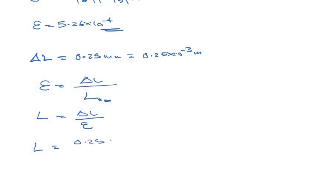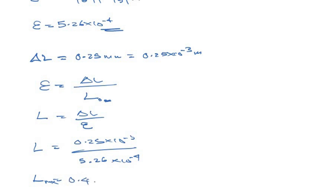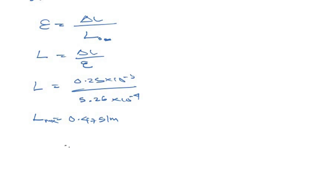So our maximum length L equals 0.25 times 10 to the power of minus 3 divided by 5.26 times 10 to the power of minus 4. Computing this carefully, the maximum length equals 0.4751 meters, which can also be expressed as 475.1 millimeters. This is our maximum final length.